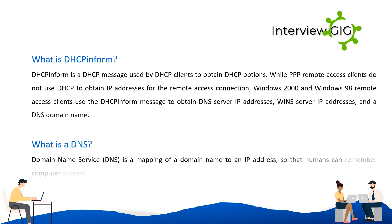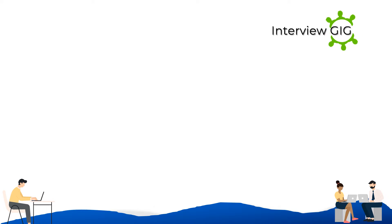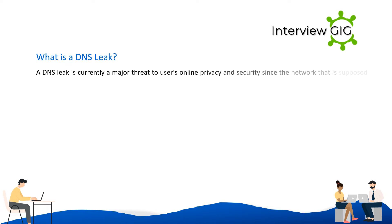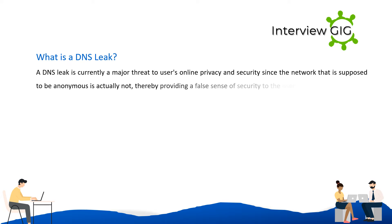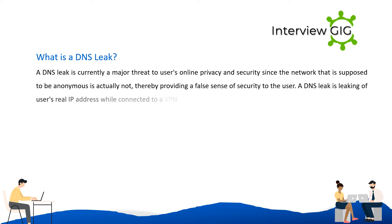What is DNS? Domain Name Service (DNS) is a mapping of a domain name to an IP address so that humans can remember computer addresses by a domain name instead of an IP address. What is a DNS leak? A DNS leak is currently a major threat to user online privacy and security, as the network that is supposed to be anonymous is actually not, providing a false sense of security. A DNS leak is the leaking of a user's real IP address while connected to a VPN service.